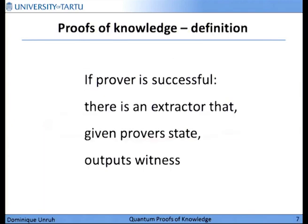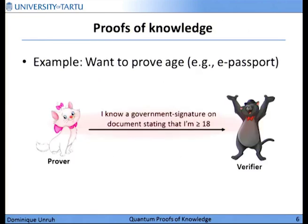This is why we need proofs of knowledge that allow us to express the fact that we know a certain thing — in this case, a signature. The definition of proofs of knowledge, very roughly, is: we want that if the prover succeeds in convincing the verifier, then a certain machine called the extractor can, given only the state of the prover, compute the witness. In this example, if the prover succeeds, we could extract from the prover the signature of its age.